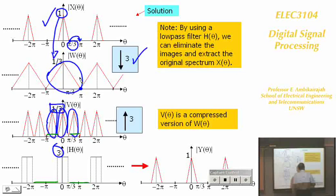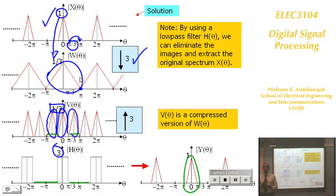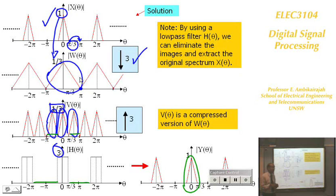You could ask why do this? In multirate systems, various operations happen that you will study in Signals and Systems 2. For Signals and Systems 1, you need to know how to draw the magnitude spectrum — whether to stretch or compress — and why.